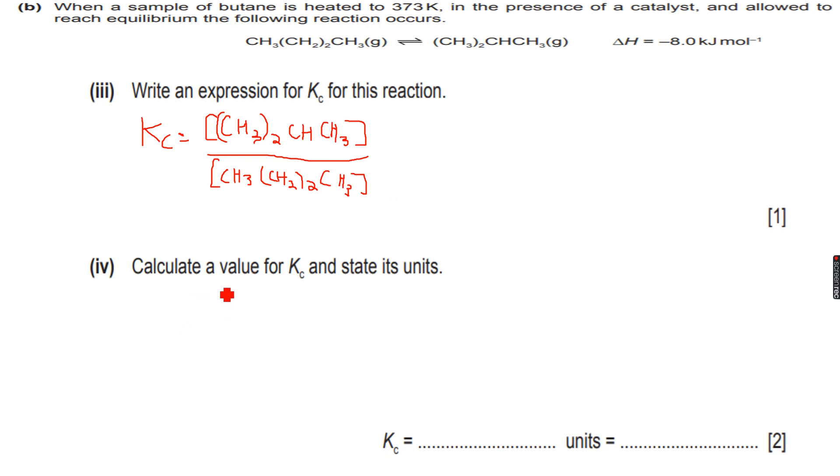Then calculate the value of Kc and state its units. So Kc is equal to the concentration of methylpropane, which was 0.7 mole per dm³, over the concentration of butane, which was 0.3 mole per dm³. And I get this as 2.33.